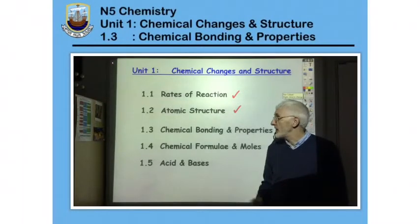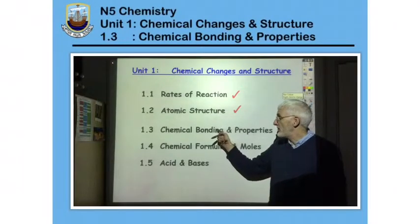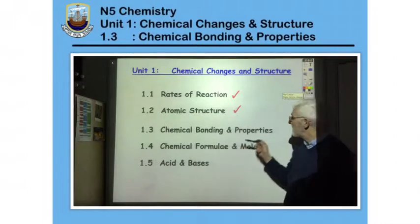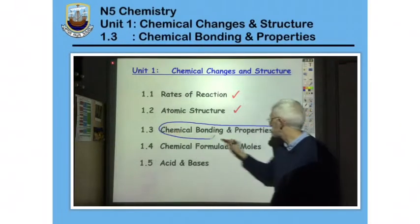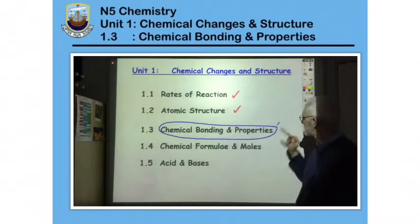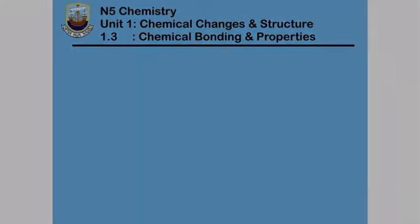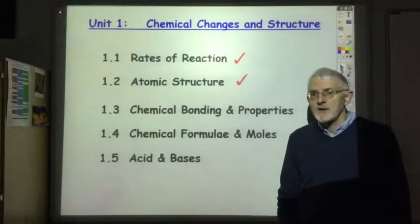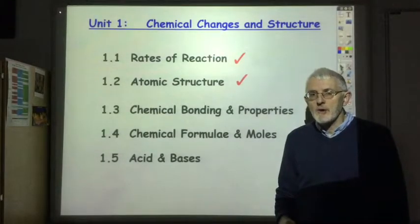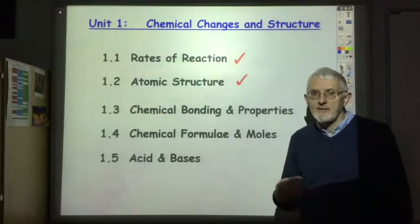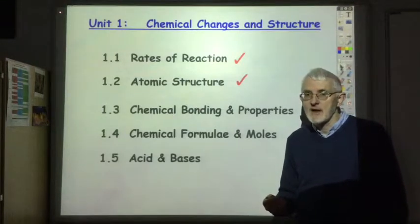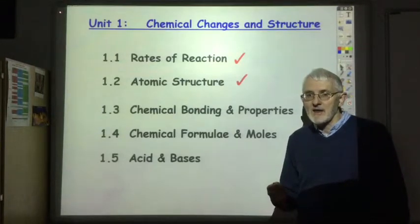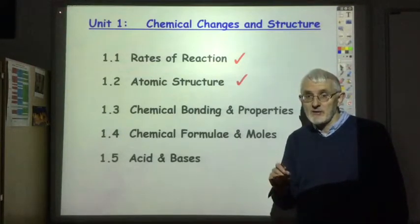In this lecture we are going to look at topic 1.3 chemical bonding and properties. In this topic we are going to look at the different ways in which atoms can form bonds and the resultant properties that result from that.